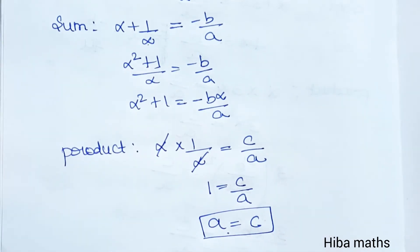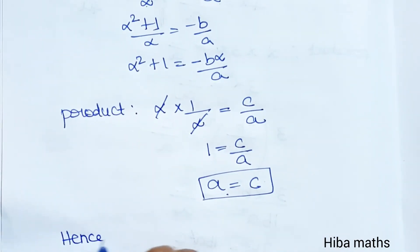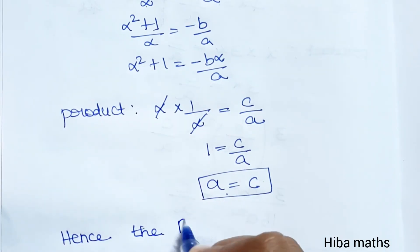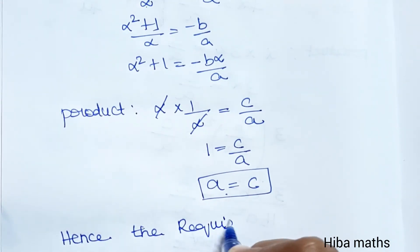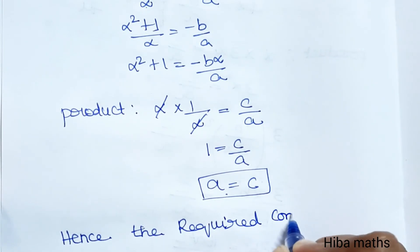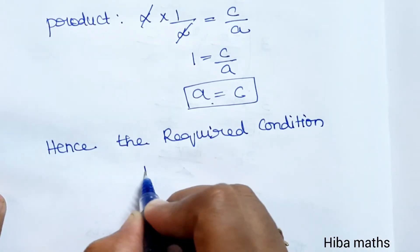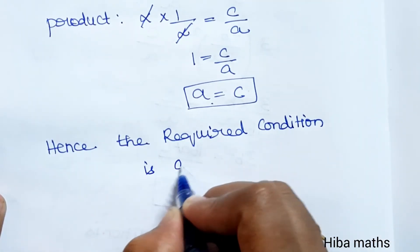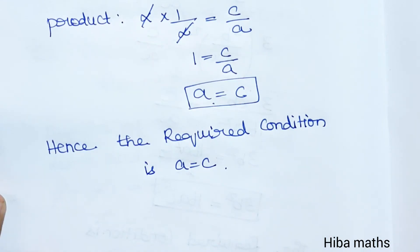Hence the required condition for one root to be the reciprocal of the other is A = C.